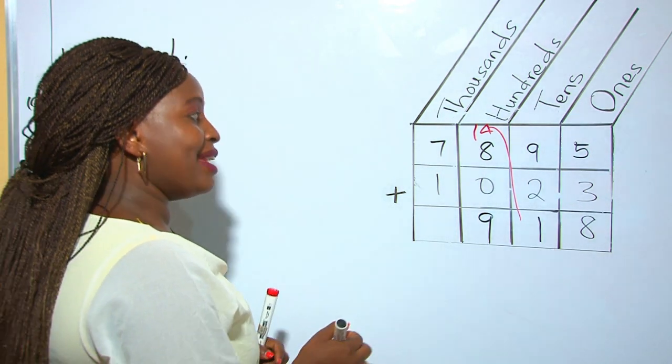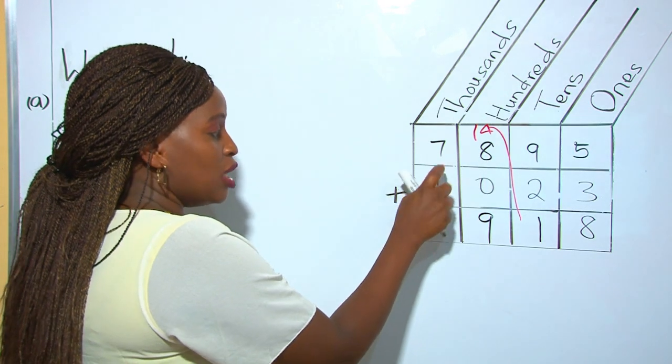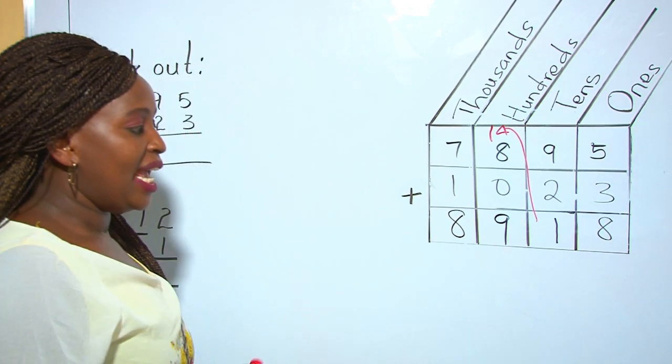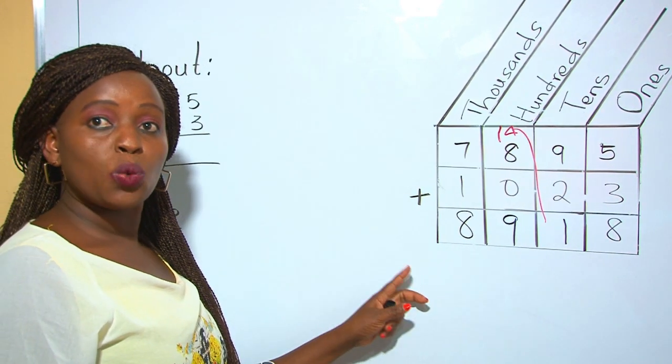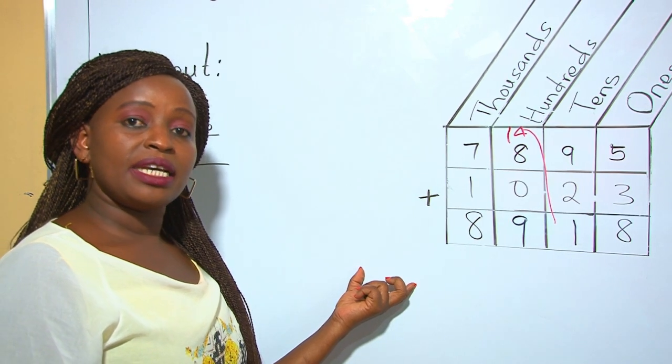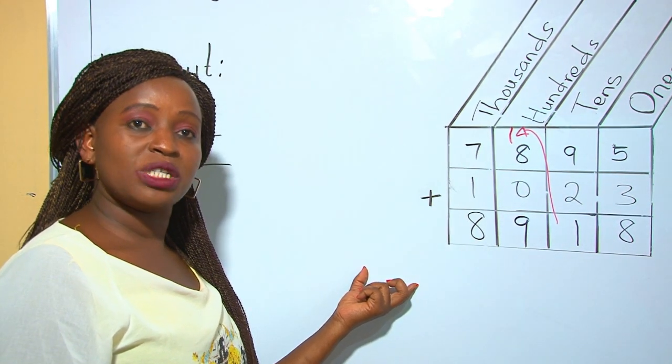Now we proceed to adding the thousands. 7 plus 1 is 8. And that is what we call addition with single regrouping. This is learned in grade 4 mathematics as a new concept.